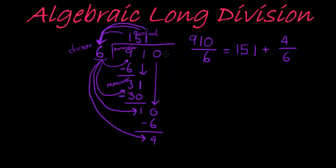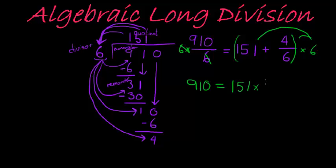Now, what I can do is simply multiply both sides here by a 6. If I take the left-hand side and the right-hand side divided by 6, on this side it will cancel, and I'll be left with 910 is equal to, here I can distribute, 151 times 6 plus, and when I multiply this with a 6, the 6 will cancel, and I'll just be left with 4.